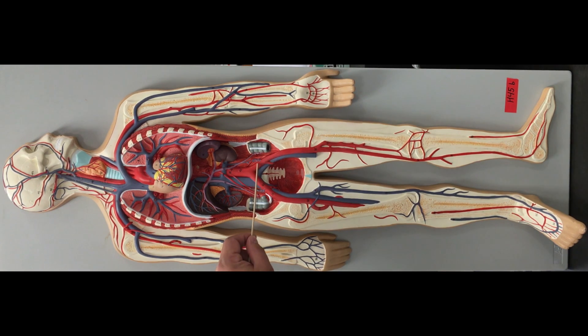Once we get to this next bifurcation off the abdominal aorta, we have our common iliacs. They're going to bifurcate again to become our internal and external iliacs. We're going to branch again to our femoral artery and deep femoral artery.